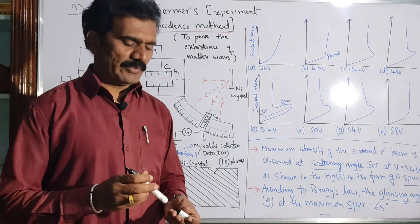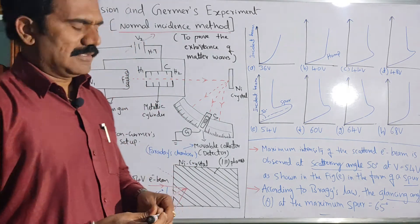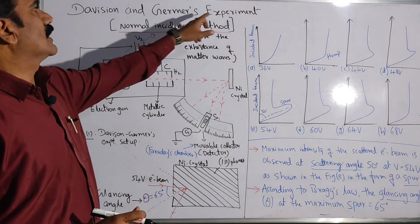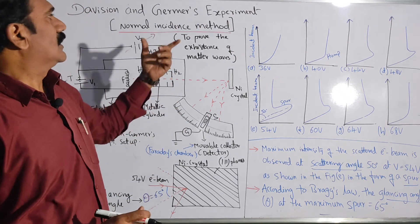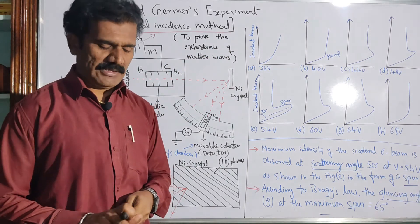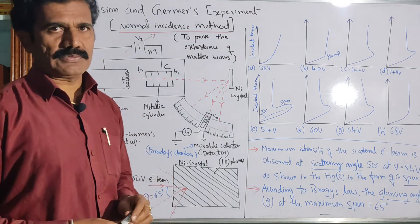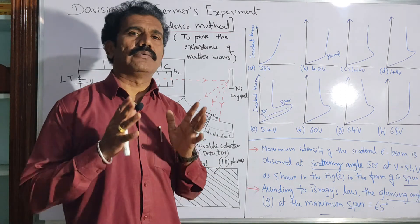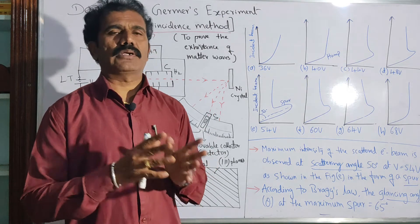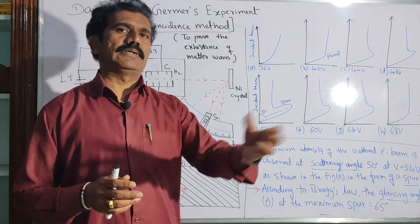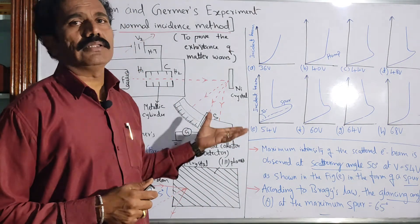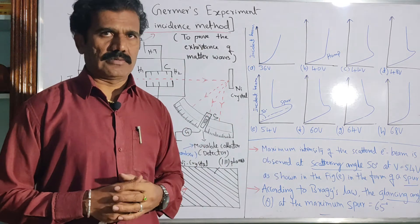Now after a long time, I am making one more video for you. This is the video to discuss the Davisson and Germer experiment. This is basically an experiment to prove the existence of matter waves. The matter waves are nothing but the waves associated with any matter particles like electron beam or any other particles which are moving with very high speed. So the experiment is basically to find the wavelength of the fast moving electrons.